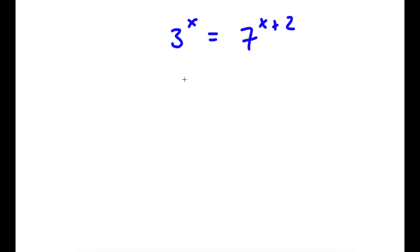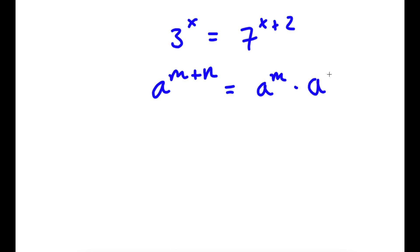In this problem, I have 3 to the power of x is equal to 7 to the power of x plus 2. To solve this, if I have something in the form a to the power of m plus n, this is equal to a to the power of m times a to the power of n. So in this case, 7 to the power of x plus 2, I can rewrite as 7 to the power of x times 7 to the power of 2.